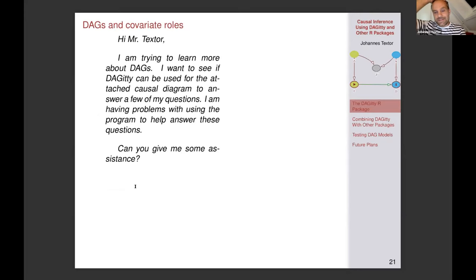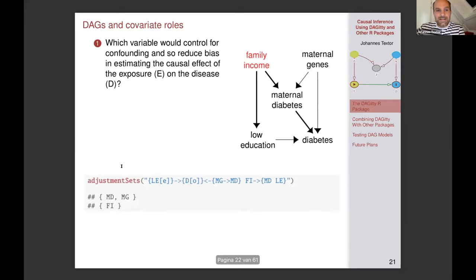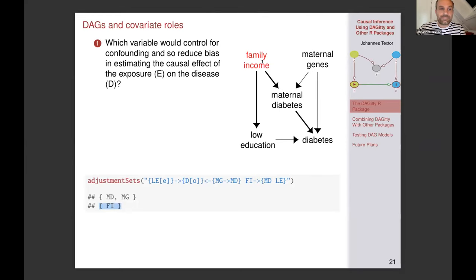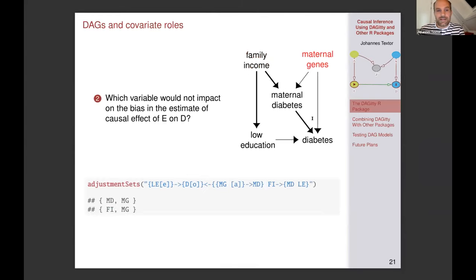This is an actual email I got — I want to circle back to who these packages are developed for. It's people like this person who are really trying to learn about causal inference and DAGs. All of their questions could be answered using the functions in this package. For instance, which variable controls for confounding? That's just asking for adjustment sets. You would see that family income itself would be a sufficient adjustment set. Whether you condition on maternal genes doesn't impact bias but might impact the precision of your estimate. And this is the thing known as M-bias — variables you could adjust for that would cause additional bias.